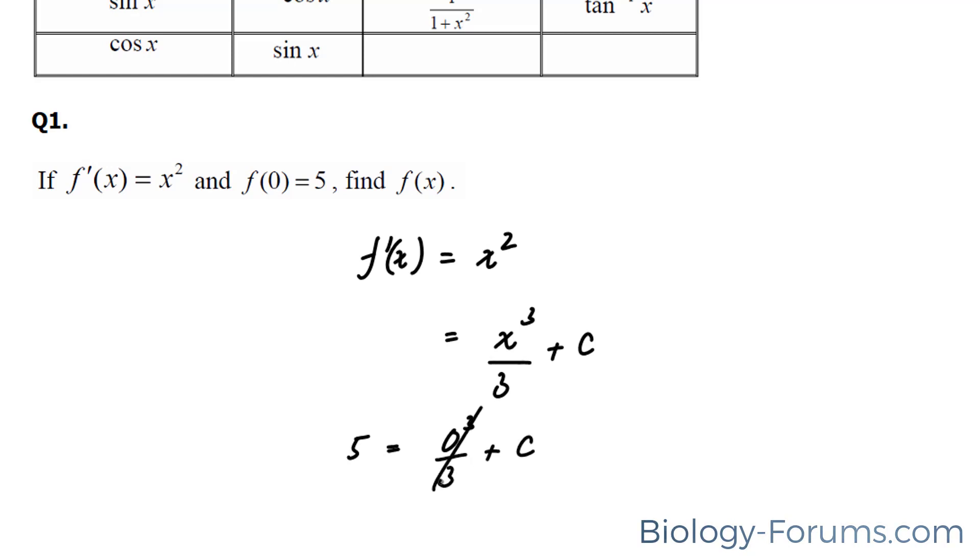This cancels out, goes to 0, and you end up with a c value of 5. So therefore, our final formula is f at x equals x to the power of 3 over 3 plus 5.